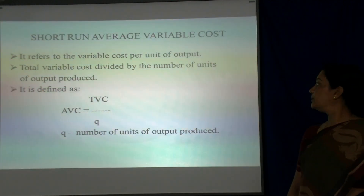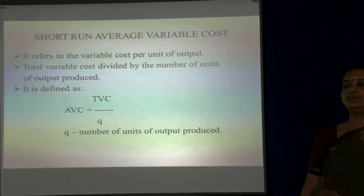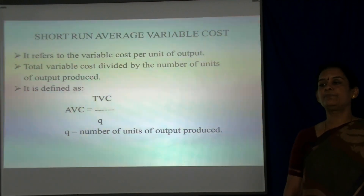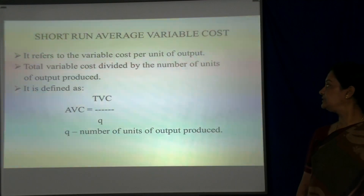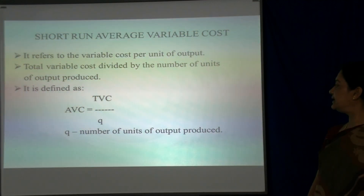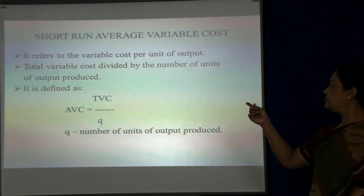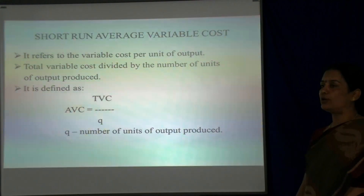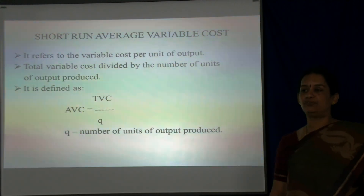Next is short-run average variable cost. It refers to the variable cost per unit of output. Total variable cost is divided by the number of units of output produced. It is defined as AVC = Total Variable Cost / Q, where Q is the number of outputs produced by the firm.